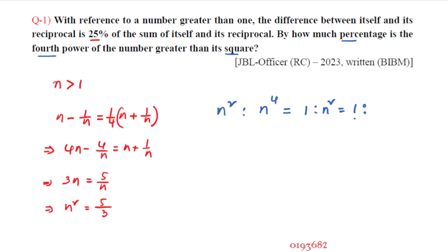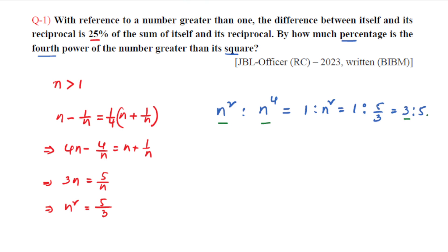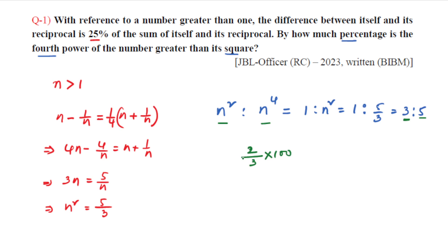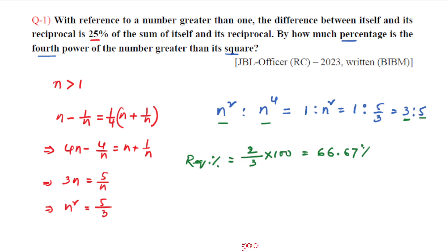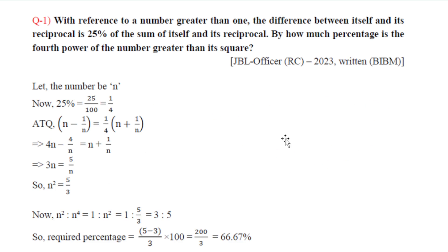Since n squared equals 5/3, the difference between n⁴ and n² relative to n² is: (5/3 minus 1) divided by 1, which is 2/3. So the percentage is 2/3 into 100, which equals 66.66 percent, or approximately 66.67 percent. The answer to question one is 66.67 percent.